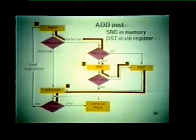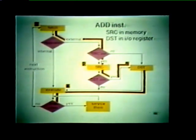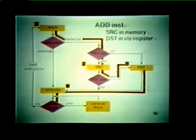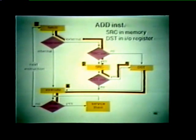Now the processor has been instructed to add the value in a memory location to the value in an IO device register. In this case, both operands are external to the processor — neither is stored in a GPR. Therefore, we must first branch to the source state to get the operand from memory, then branch to the destination state to get the second operand from the IO register. Once both operands are retrieved, we proceed to the execute state. This add instruction uses all four ROM states: fetch, source, destination, and execute.